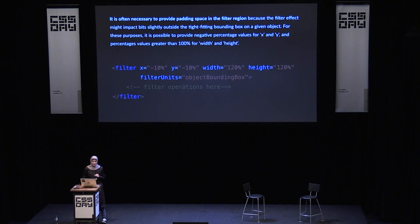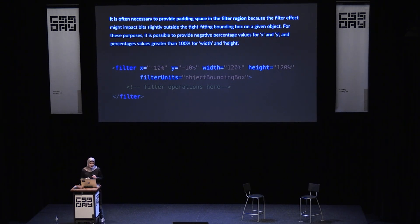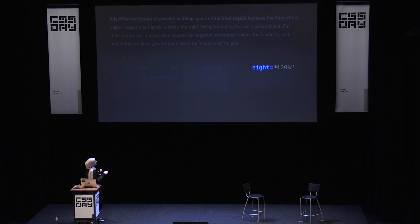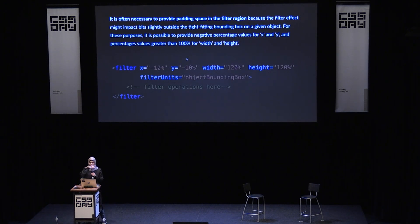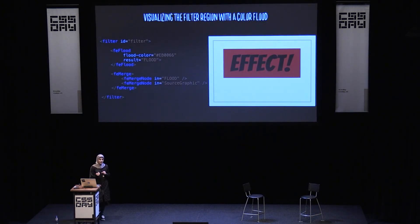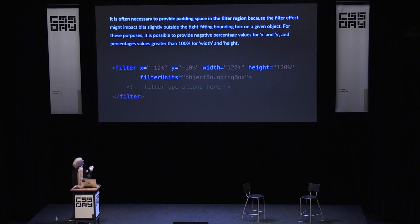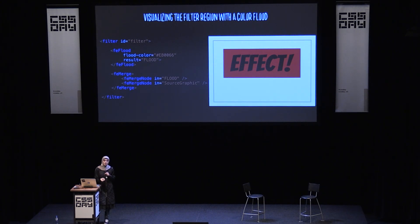According to the specification, it is often necessary to provide padding space in the filter region, because the filter effect might impact bits slightly outside the tight-fitting bounding box. For these purposes, it is possible to provide negative percentage values for X and Y, as well as values above 100% on width and height of the filter. You can define the region and position using X, Y, width, and height on the filter element. By default, browsers add an amount of 10% on each side as internal padding to filters.